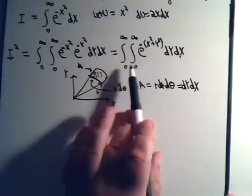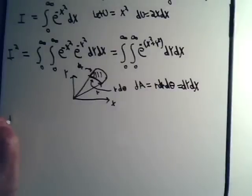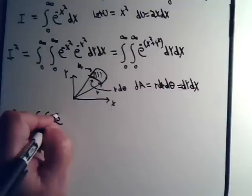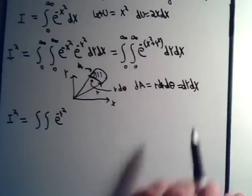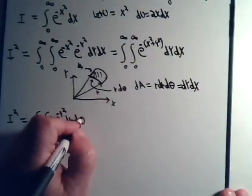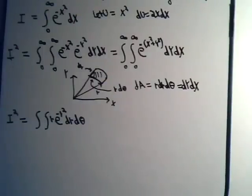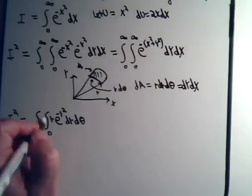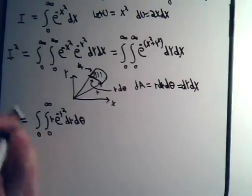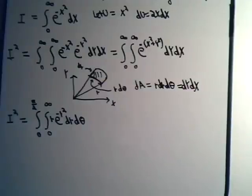Let's rewrite I squared in terms of polar coordinates. We have I squared equal to the double integral of e to the minus r squared times r dr dθ. Since x and y go from zero to infinity, r goes from zero to infinity. And since we're constrained to the first quadrant, θ goes from zero to pi over two. Hopefully you can see why this is worth all the trouble.